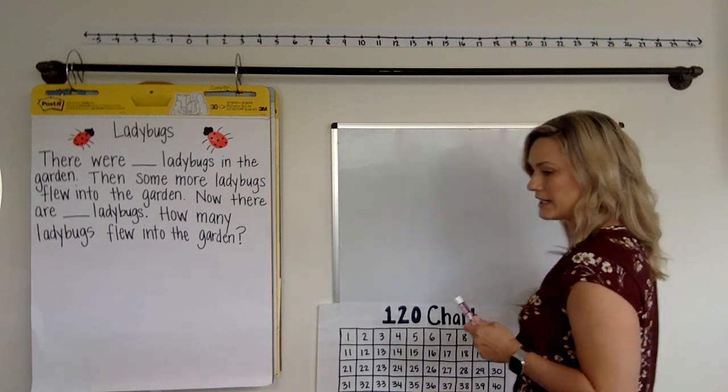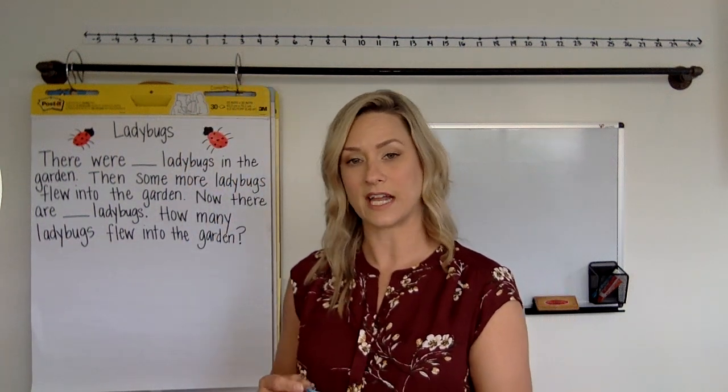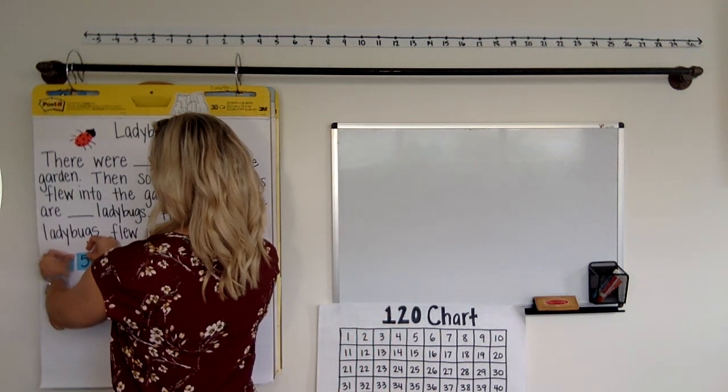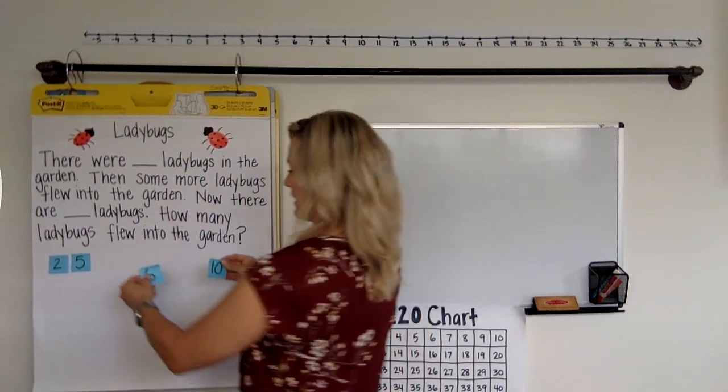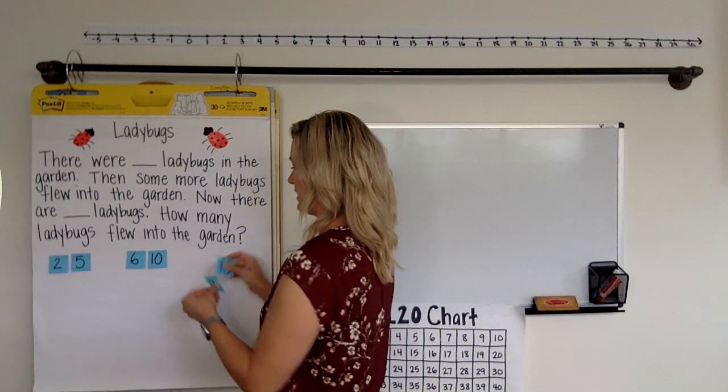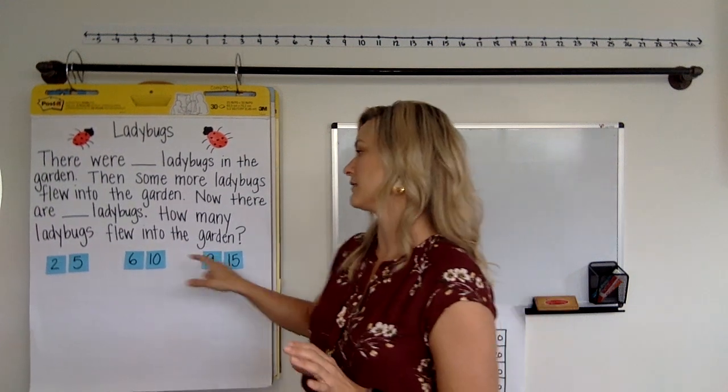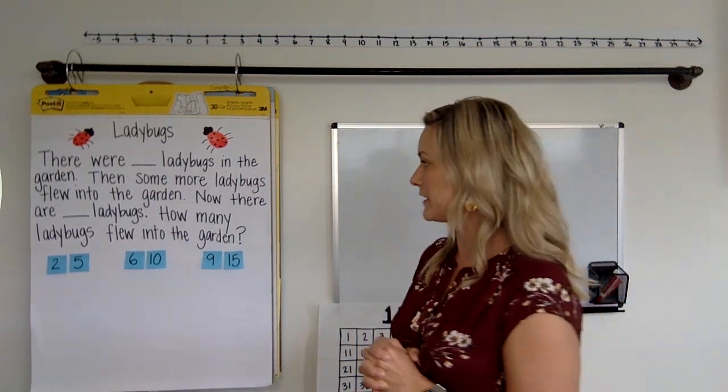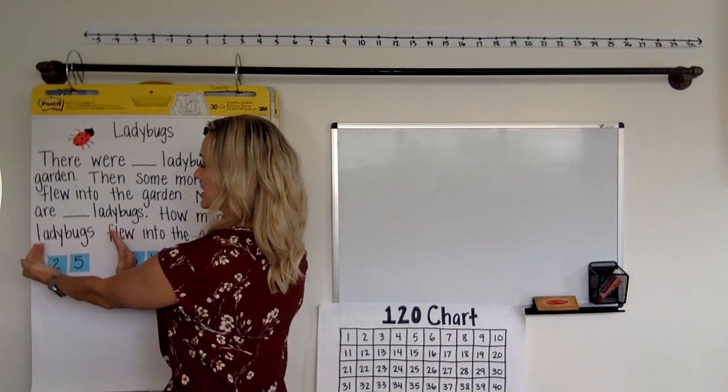Now in class we do this too. So they get number sets and they get to choose the set of numbers that's just right for them. So their just right number set might be 2 and 5. Or it might be 6 and 10. Or your just right number set might be 9 and 15. So your kid, your child, will choose the number set that feels right to them. It's important to let them choose the one that feels right. And then they will fill in. So if I want to choose 2 and 5, I have to choose that set of numbers together. So these have to stick together.